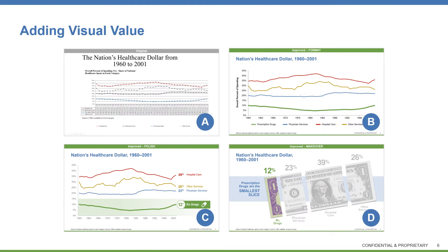As a quick recap: Slide A has little or no visual value — it doesn't look professional and can even distract your audience. Slide B, a clean up, is better; it has some visual value, it's simple and clean, with a quality template applied to it. Slide C, a professional polish, adds more visual value — easy, fast, and gets to the point.